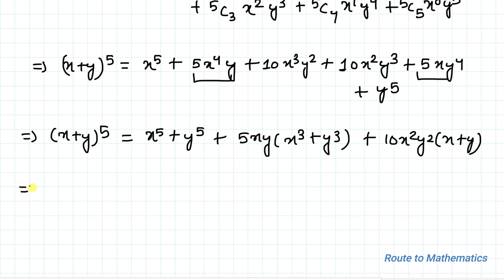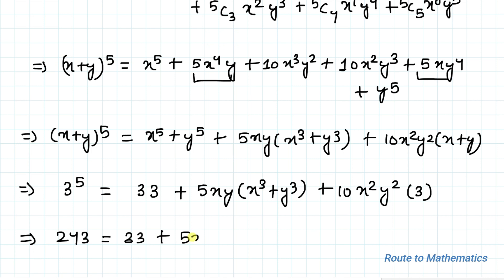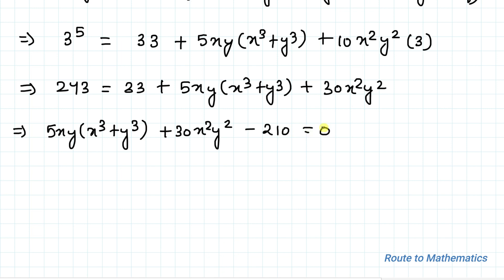From equation 2, x + y = 3, and from equation 1, x⁵ + y⁵ = 33. Substituting, 3⁵ = 33 + 5xy(x³ + y³) + 10x²y²·3. Since 3⁵ = 243, this gives us 243 = 33 + 5xy(x³ + y³) + 30x²y², which simplifies to 5xy(x³ + y³) + 30x²y² − 210 = 0.